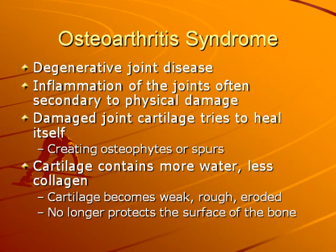Comparing rheumatoid to osteoarthritis — osteoarthritis is a degenerative joint disease and the most common arthritis we see. The patient has inflammation of the joints, usually secondary to physical damage or overuse, and the joint cartilage itself is damaged. It can have spur formation; the cartilage becomes weak, rough, and eroded, and no longer provides protection to the bone. These patients will usually have aching pain that is worse as the day goes on. Where rheumatoid patients have worse pain in the morning, osteoarthritis gets worse with more joint use. It can be one-sided rather than symmetrical, and is very common in athletes and obese patients in their weight-bearing joints.